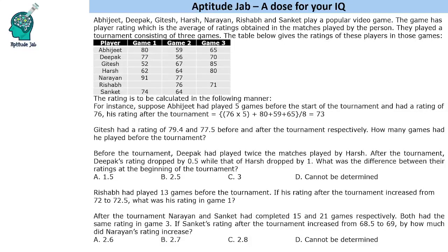Hello everyone, welcome to Aptitude Lab. This is a set in which we are given a data table about players who play a popular video game. The game has a player rating which is the average of ratings obtained in the matches played by the player. It is good that they have given this, otherwise it would be difficult to understand how the rating is calculated.